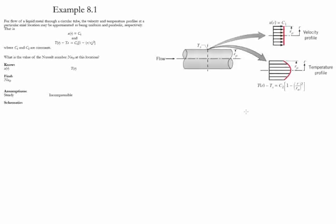Example 8.1. In this example, there is a liquid metal flowing through a circular tube and the velocity and temperature profiles at a particular axial location is given. The goal of the problem is to determine the Nusselt number at that particular location.